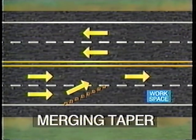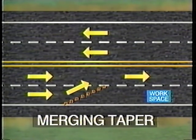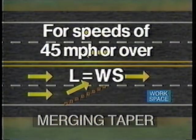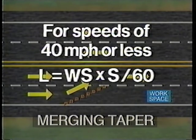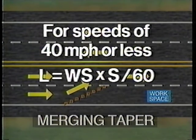The length of each type of taper is very important and is determined by several factors. The length of a merging taper, which is used to close a lane, is determined by the speed of traffic and the width of the lane to be closed. The two formulas are discussed in the Manual on Uniform Traffic Control Devices. For speeds of 45 miles per hour or greater, the merging taper length should be at least the width of the lane multiplied by the posted speed or the observed operating speed. For speeds of 40 miles per hour or less, the length of the taper should be at least the product of the width of the lane times the posted speed times the posted speed divided by 60.